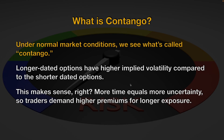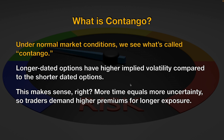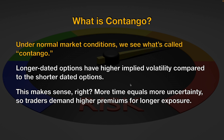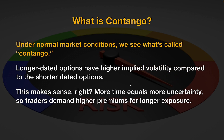Now I want to review something called contango. Under normal market conditions, we see what's called contango — longer dated options have higher implied volatility compared to the shorter dated options. And this makes sense if you think about it: more time equals more uncertainty, so traders demand higher premiums for longer exposure.